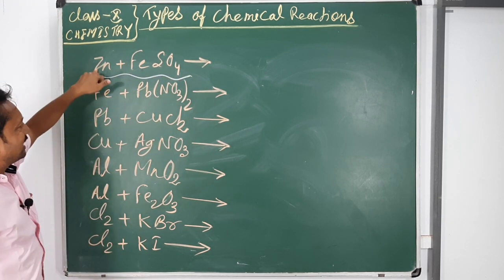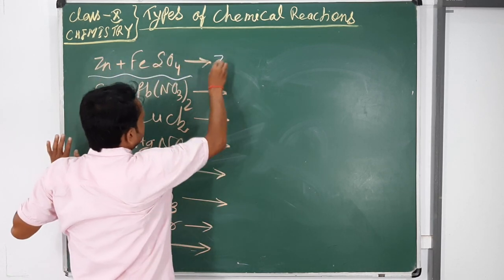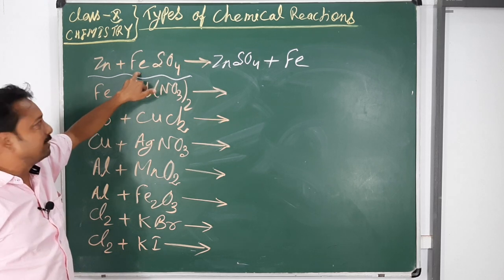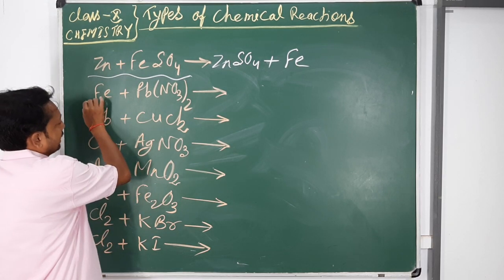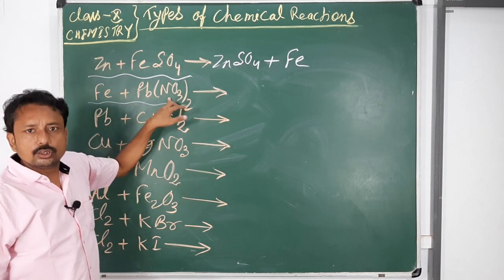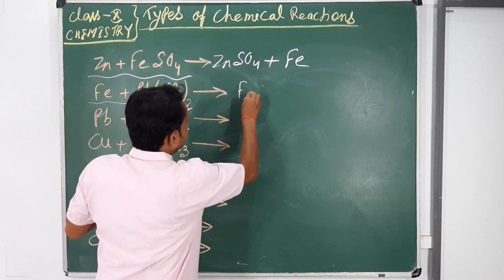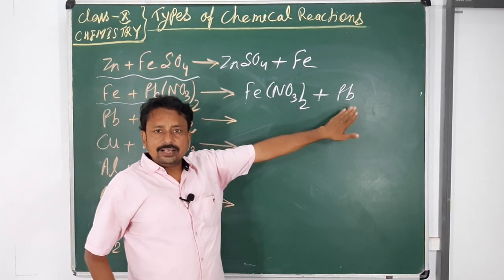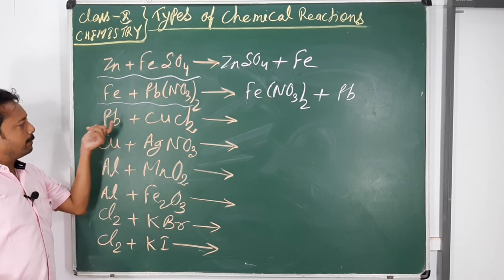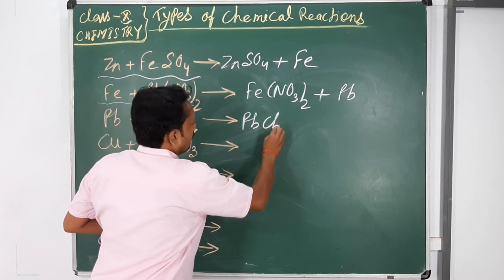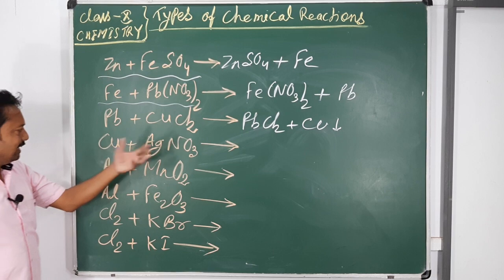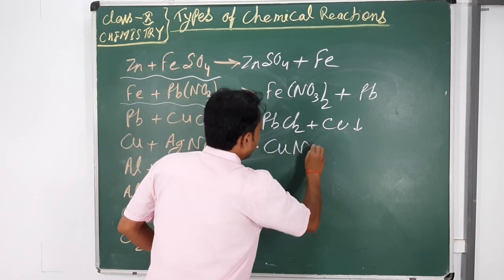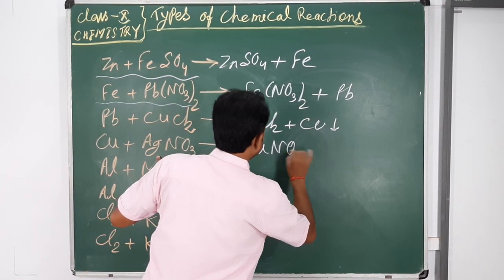For example, Zn is more reactive than iron, so zinc will easily displace iron from its salt solution and form zinc sulphate, displacing iron. In another reaction using lead nitrate aqueous solution, iron can displace lead to form Fe(NO₃)₂ and lead is displaced because its reactivity is less than iron. Similarly, lead displaces copper to form PbCl₂, and copper displaces silver to form Cu(NO₃) and silver is displaced.